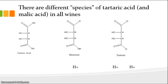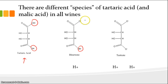Given that those protons come off in sequence, one after another, if we have tartaric acid in wine — and the same actually goes for malic acid — it's going to exist in three different forms, or species. One species is tartaric acid, which has both acidic protons still attached. The second species is bitartrate, which has one proton still attached. In the case of tartrate, it's lost both acidic protons.